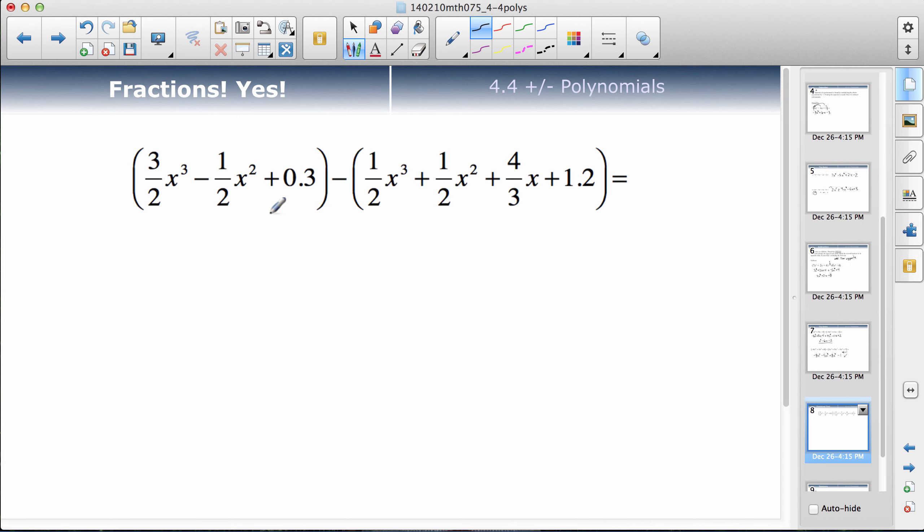One last one, one with fractions. I'm going to rewrite it. 3 halves x cubed minus 1 half x squared plus 0.3 minus a half x cubed minus a half x squared minus 4 thirds x minus 1.2. Notice that minus went to every one of the things in there.